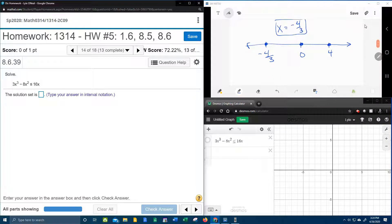And then I'm going to need test points to determine which sections to shade. Alright. So I need a number less than negative 4 thirds. That's negative 4 thirds is negative 1 and a third. So maybe negative 2.